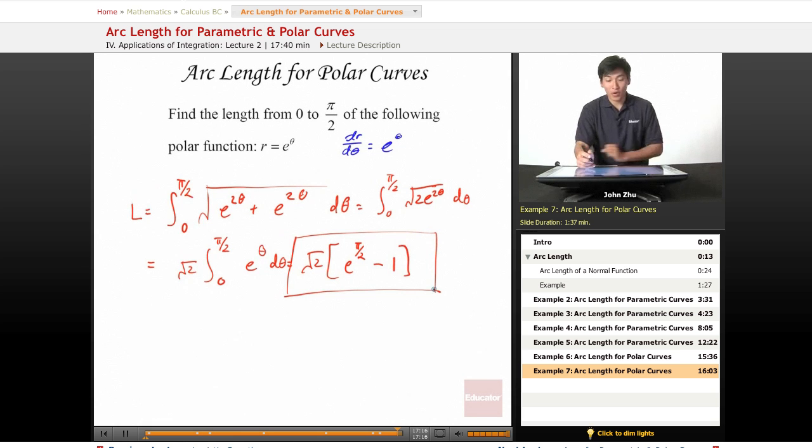So, we see that the setup for a polar curve arc length problem is the same exact setup as a parametric curve, or even just a normal function. All we have to do is find our corresponding dr d theta, or our derivative term, and plug it right into our formula.